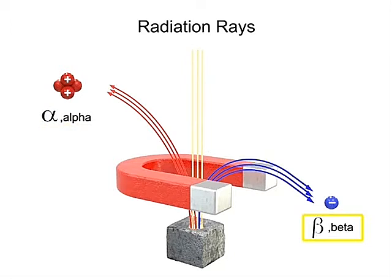Beta rays are a stream of negatively charged electrons. After passing through the magnet, they bend in the opposite direction of the alpha ray. Because electrons of the beta ray have less mass than the protons and neutrons in the alpha ray, the beta ray undergoes a more pronounced bend.